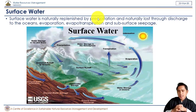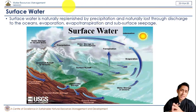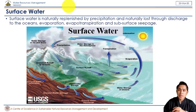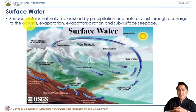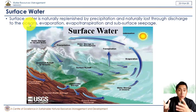Surface water is naturally replenished mainly through precipitation, and also through the contribution of glaciers and icebergs. However, factors like runoff going to oceans, evaporation, evapotranspiration from plants, and seeping of surface water into the water table as groundwater represent the main natural loss of surface water.